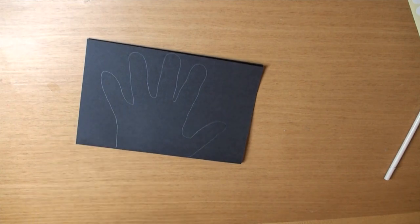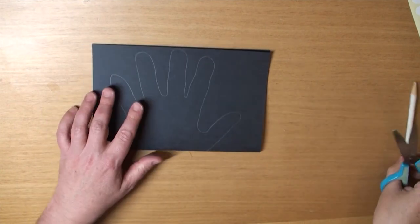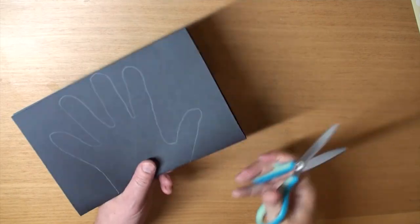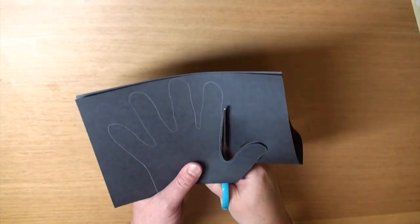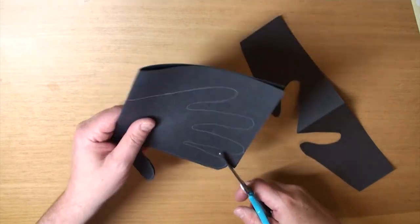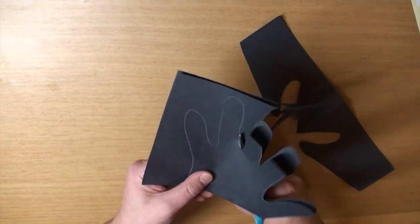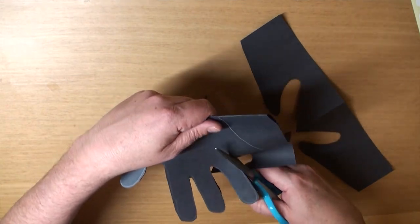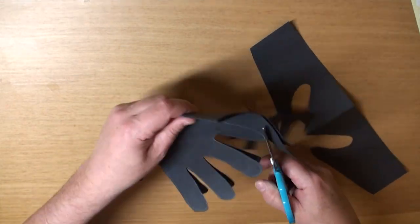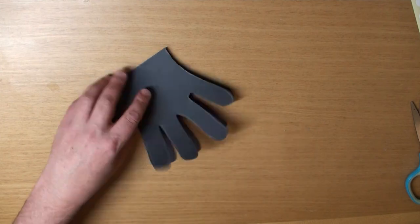Now grab your scissors and let's cut it out. Wow! This is looking great! For the little kids, you might want to help them trace their hands and cut it out.